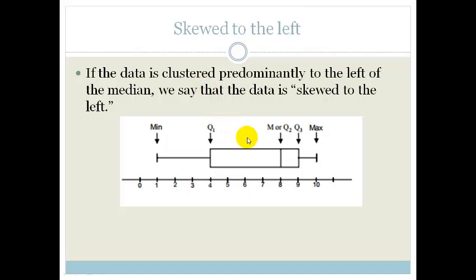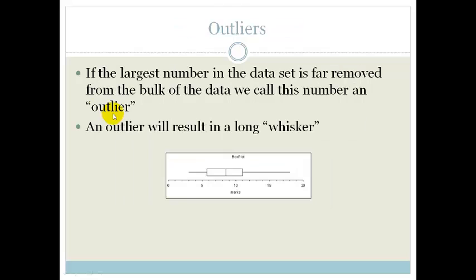And similarly, if this distance here from Q1 to the median is way bigger than from Q2 to Q3, then we say the data is skewed to the left. Easy peasy.